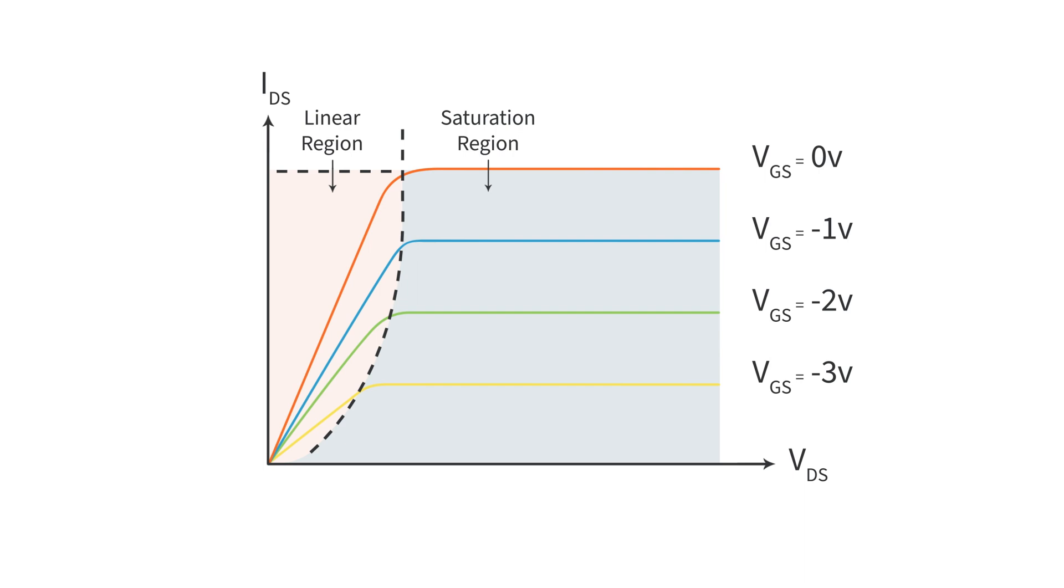And finally, as I mentioned earlier, if you make the gate to source voltage low enough or have no drain to source voltage, you're operating in the cutoff region where no current is flowing.